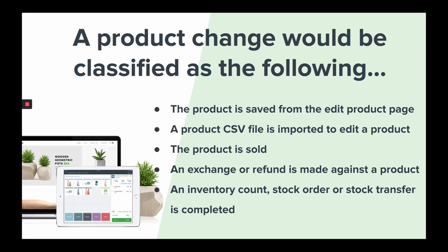A product change will be classified as the following: the product is saved in the edit product page, a product CSV is imported, a product is sold, an exchange or refund is made against a product, or an inventory count, stock order, stock transfer, or stock adjustment is completed.